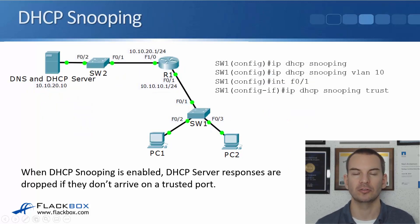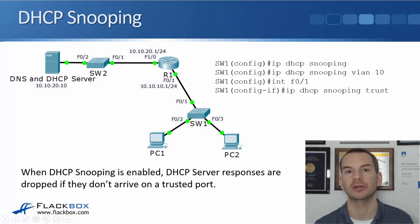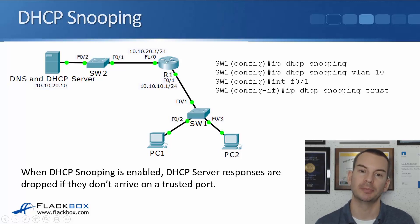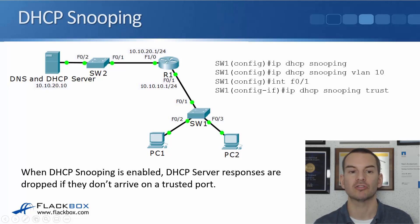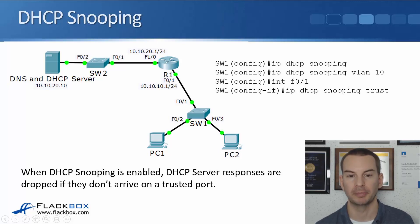There is mitigation that we can take that will prevent rogue DHCP servers from being active on your network, and the solution is DHCP snooping. With DHCP snooping, you enable this on your access layer switches and configure the ports that your DHCP server is connected to as a trusted port. In the example here, if we configure this on switch 2, it would be interface fast 0/2 that is directly connected to the DHCP server that would be configured as a trusted port.